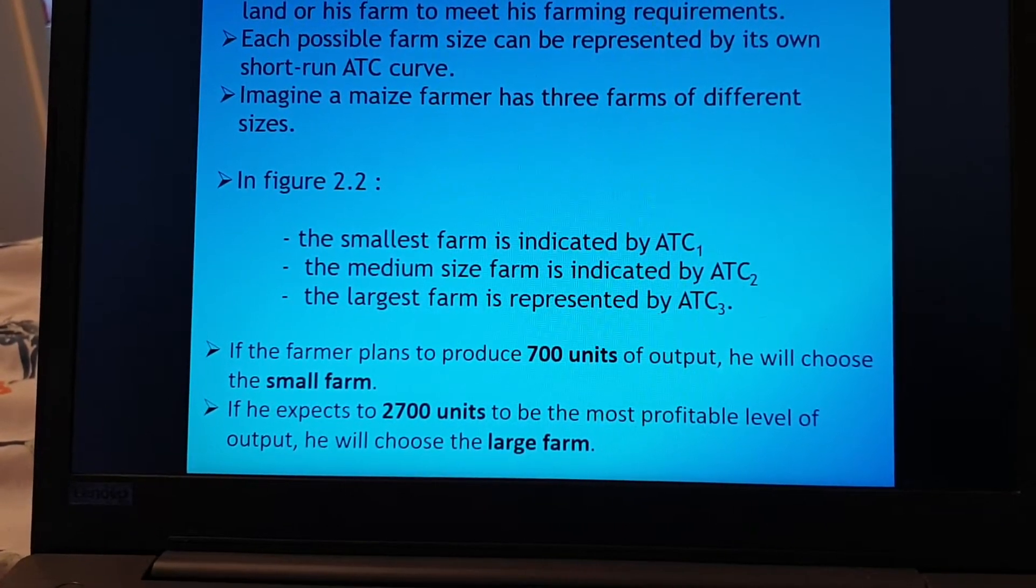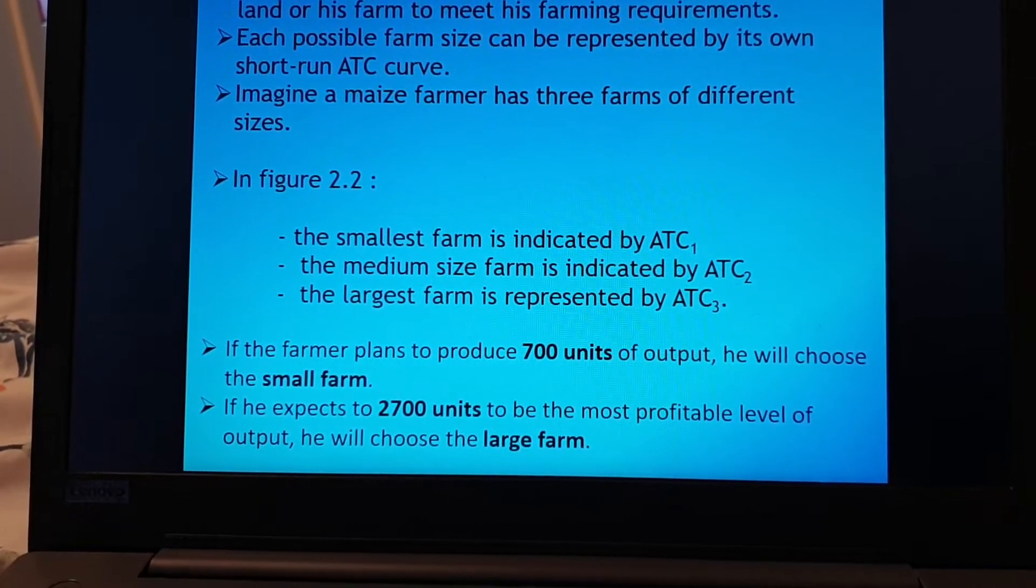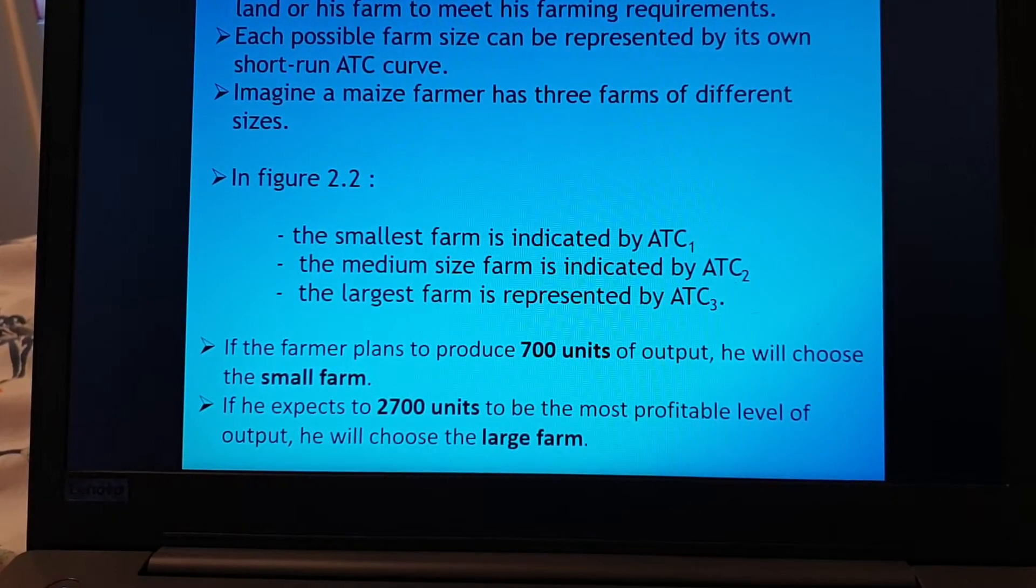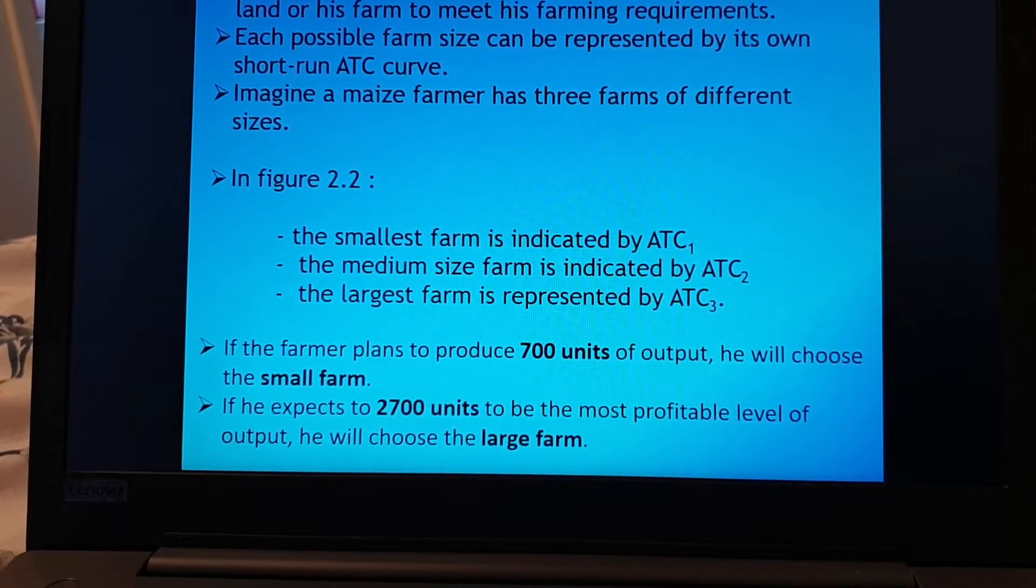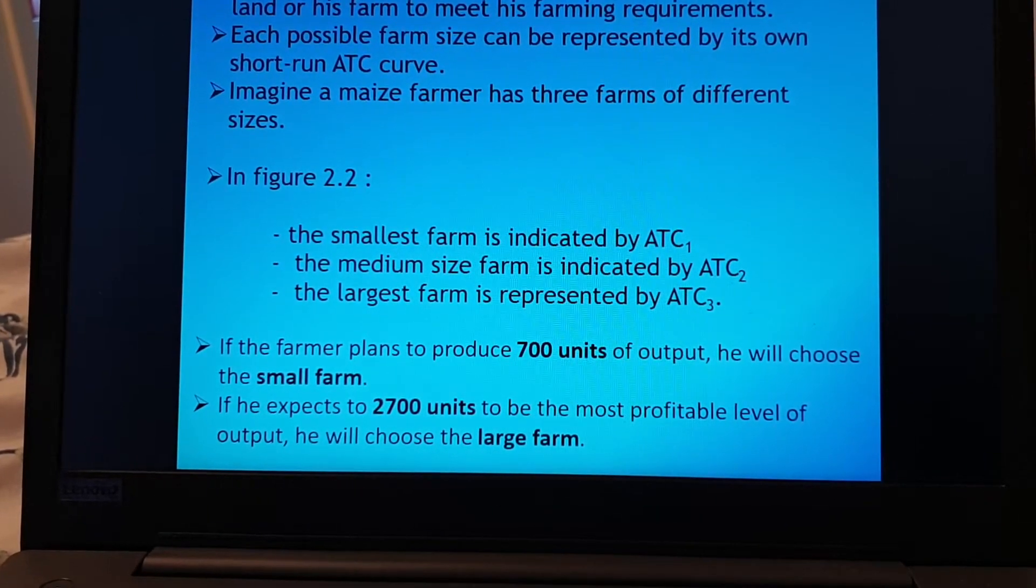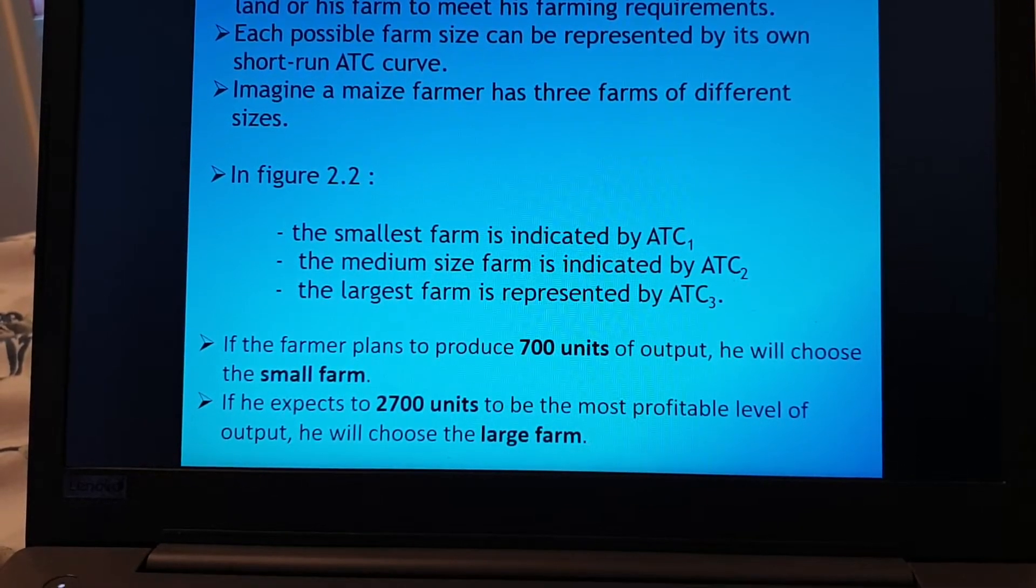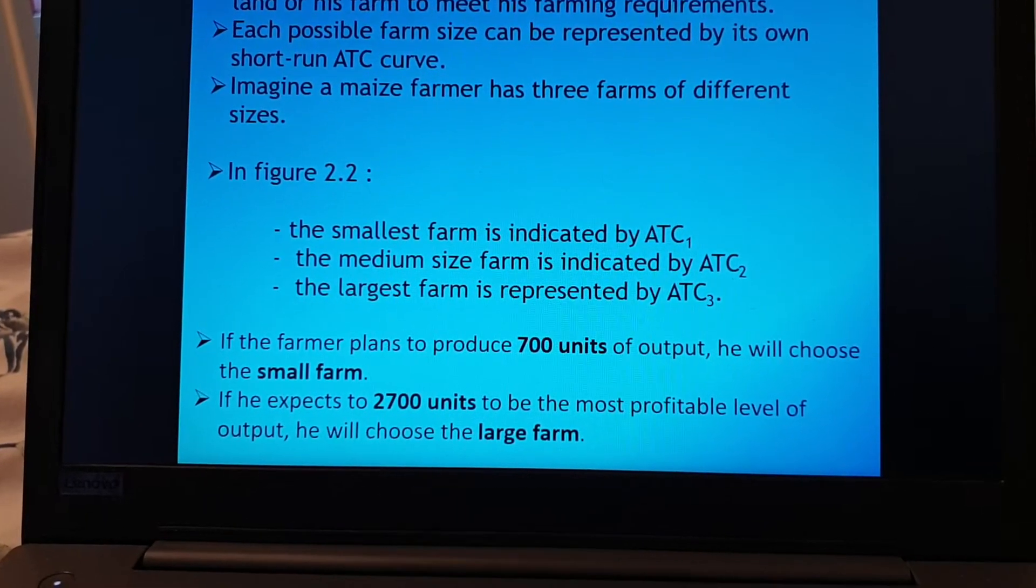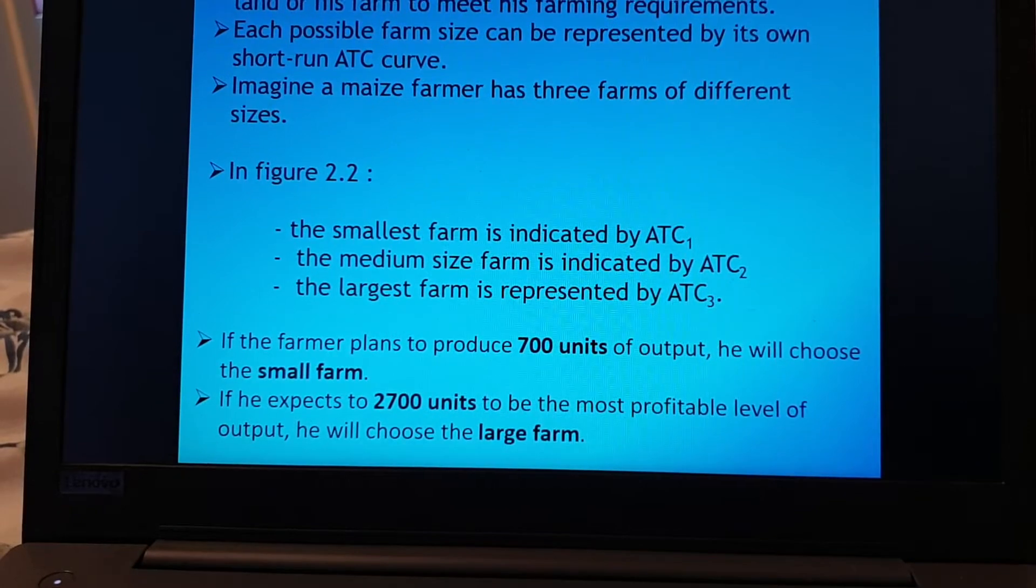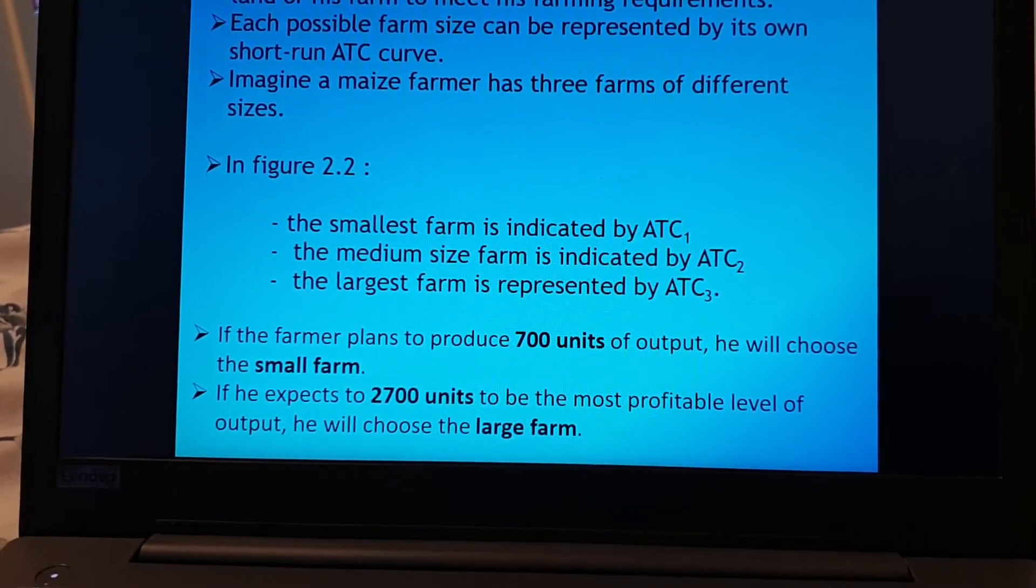If the farmer plans to produce 700 units of output he will choose the small one. If he expects to produce 2700 units to be the most profitable level of output he will choose the large farm and the same goes for the medium farm.